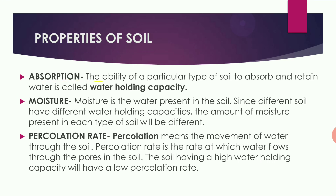Properties of soil: The first property is absorption — the ability of a particular type of soil to absorb and retain water is called water holding capacity. Moisture is the water present in the soil; since different soils have different water holding capacities, the amount of moisture in each type of soil will differ. Percolation rate means the movement of water through the soil — the rate at which water flows through the pores. Soil with a high water holding capacity has a low percolation rate.